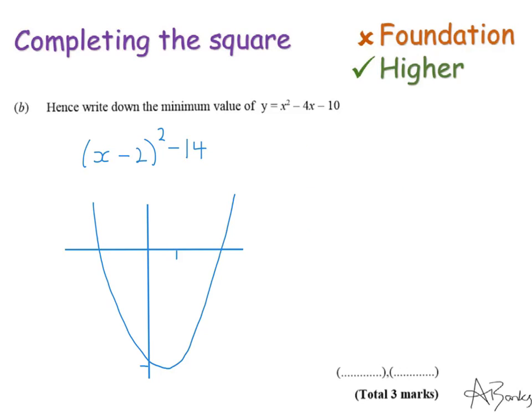Here's part b of this question. It says hence write down the minimum value for y equals x squared minus 4x minus 10. That's the expression we just completed the square on in part a. This is asking, if we were to plot this graph, what would the coordinates be of this minimum point, the very bottom of the curve?